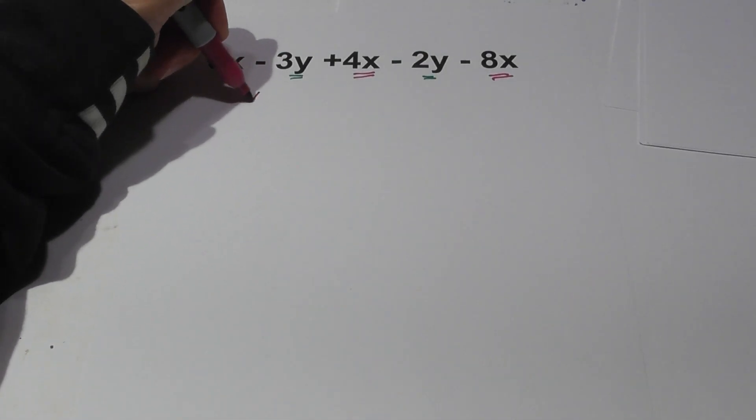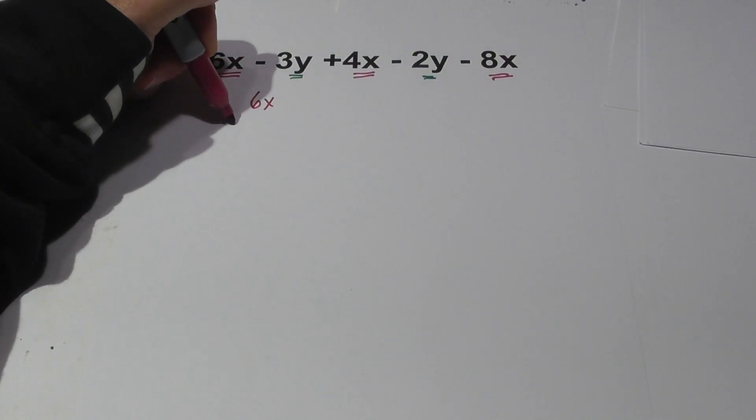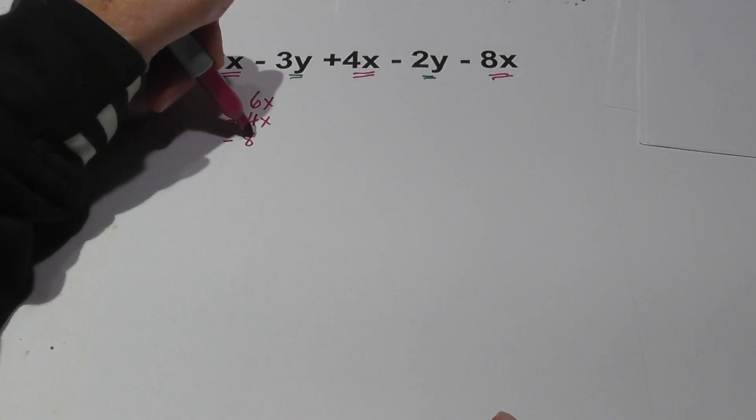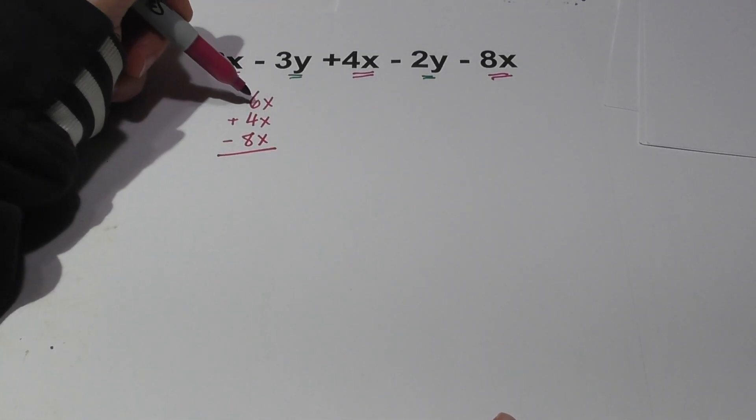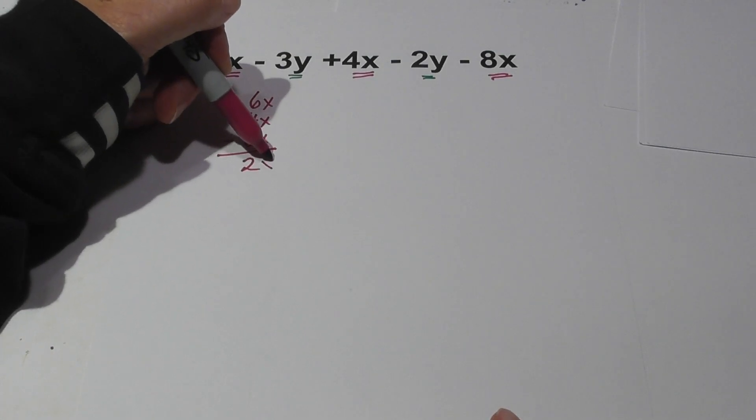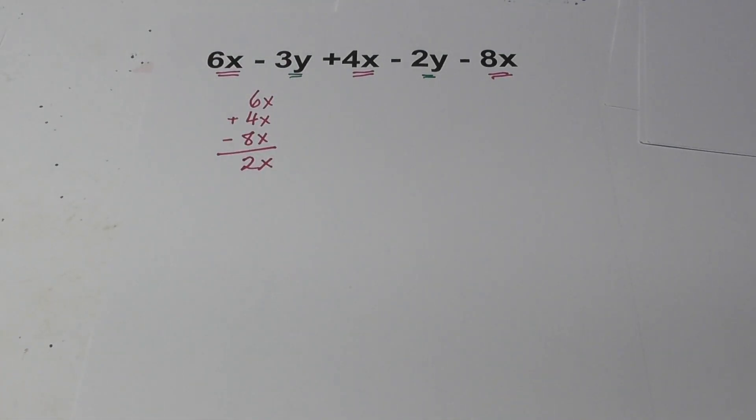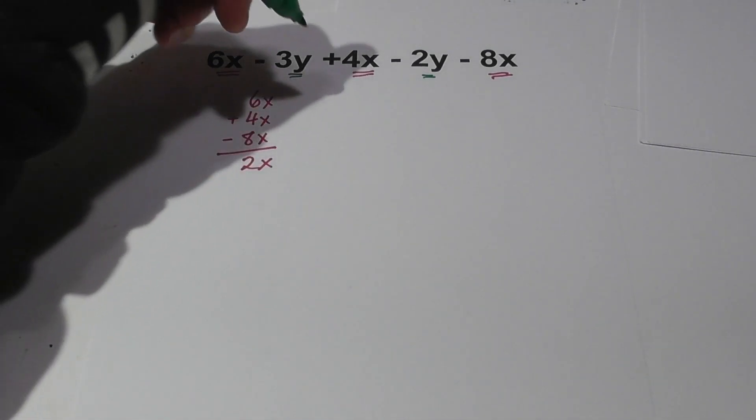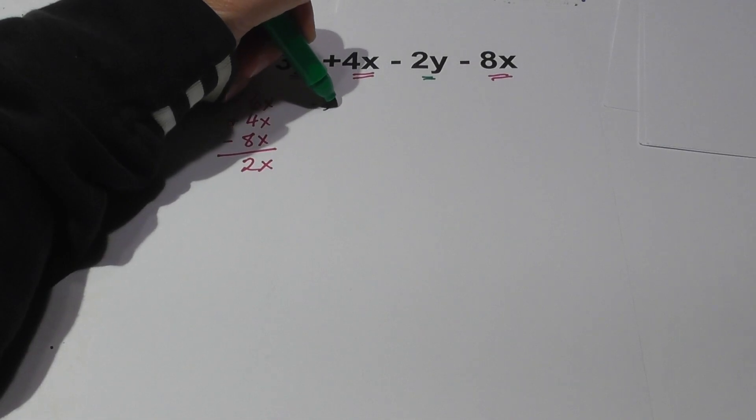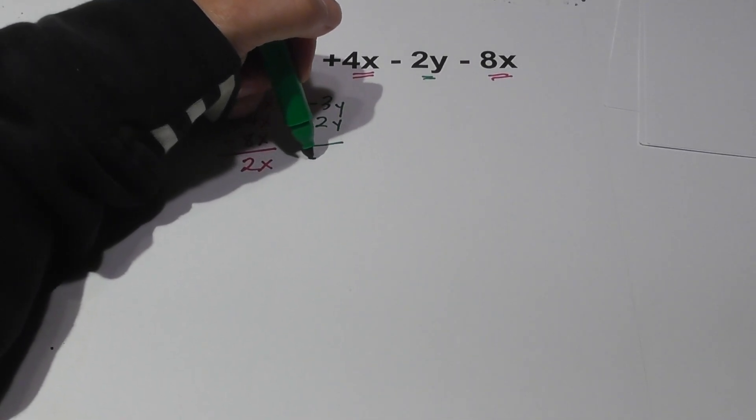Let's rewrite. We have 6x and a positive 4x and a negative 8x. 6 plus 4 is 10 minus 8 is 2x. Now let's combine the y's. I'm going to look for what's underlined in green and watch the signs. We have a negative 3y and a negative 2y and that equals negative 5y.